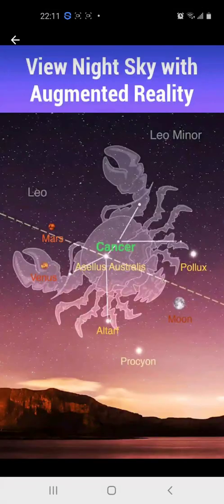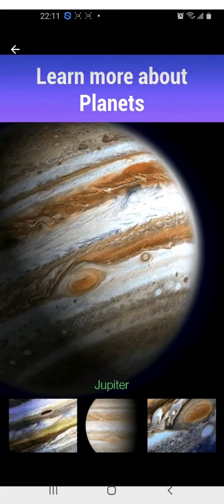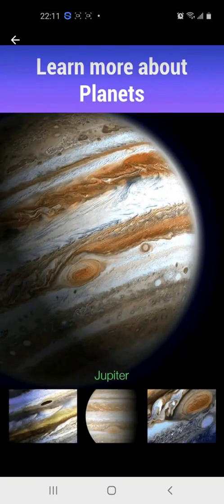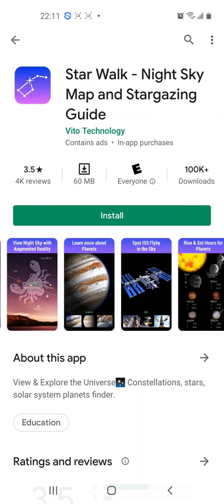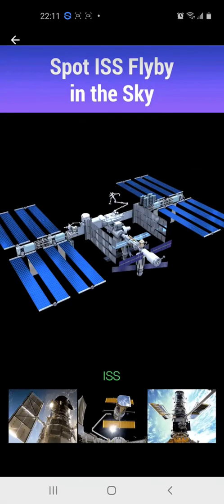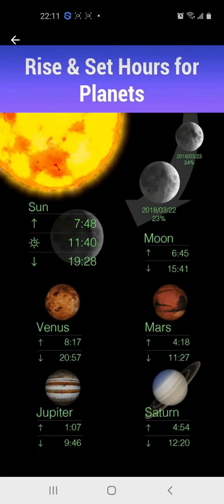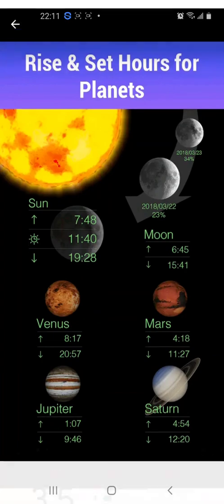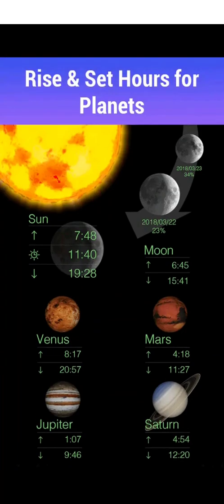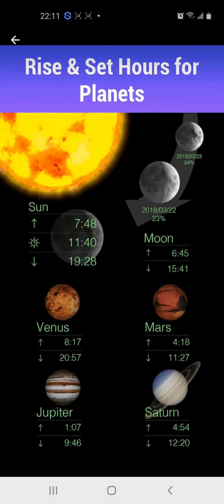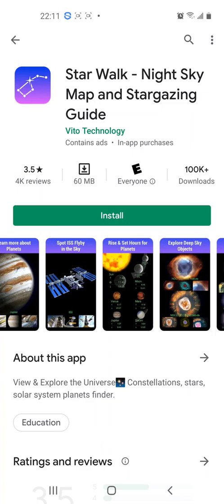There you go. That's constellation Cancer. Then you have this lovely Jupiter. Once again this one gives you the ISS as well. And look at that — information about sunset and sunrise and about the Moon and Saturn.